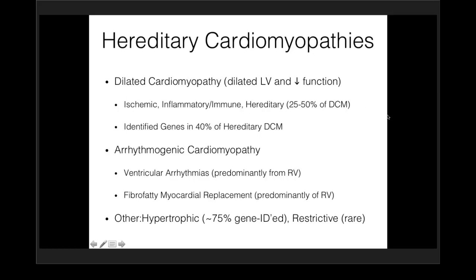For arrhythmogenic cardiomyopathies, it's defined as ventricular arrhythmias which arise predominantly from the right ventricle in association with fibro-fatty myocardial replacement, usually predominantly identified in the right ventricle. Other kinds of cardiomyopathies that are recognized are hypertrophic, which depending on phenotype may be as much as 75% gene-identified, and restrictive cardiomyopathies, which are rare.